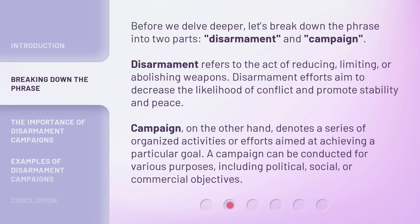Before we delve deeper, let's break down the phrase into two parts: Disarmament and Campaign. Disarmament refers to the act of reducing, limiting, or abolishing weapons. Disarmament efforts aim to decrease the likelihood of conflict and promote stability and peace. Campaign, on the other hand, denotes a series of organized activities or efforts aimed at achieving a particular goal.